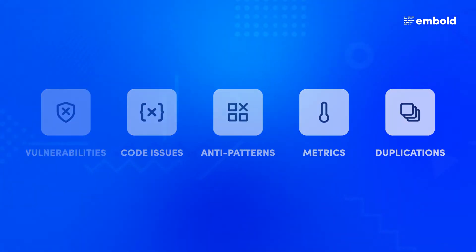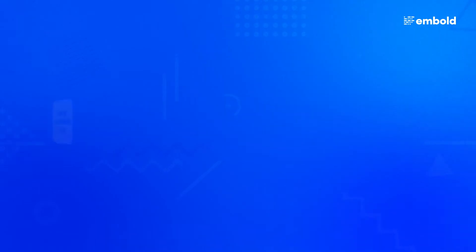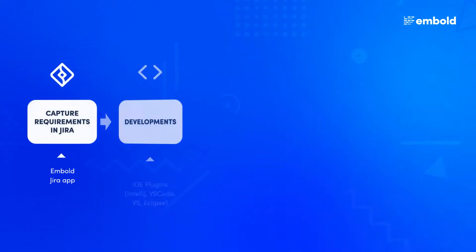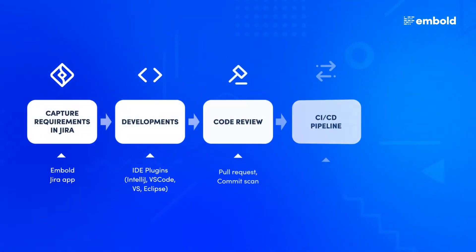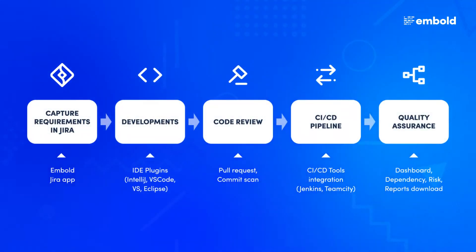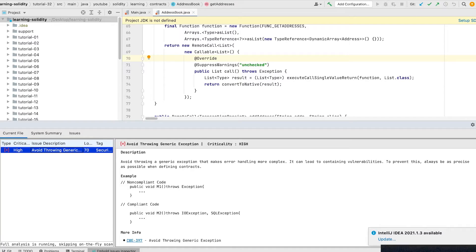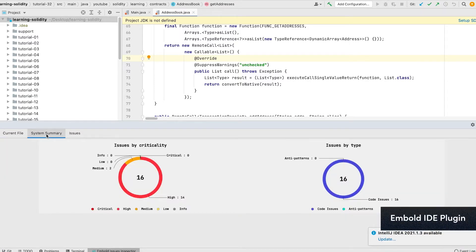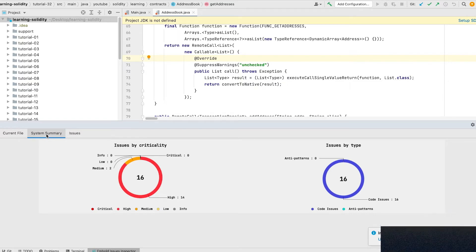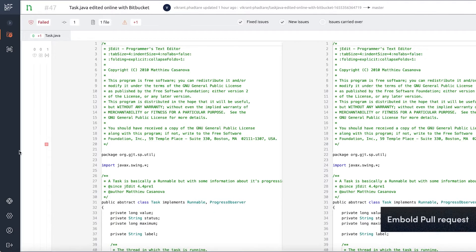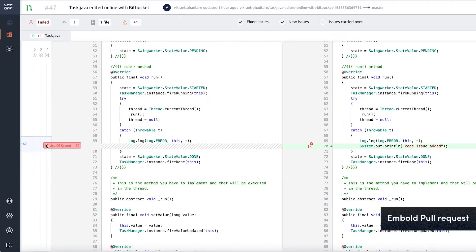The tool can be used throughout the development process. Developers can use Imbold to find out bugs proactively. Imbold IDE plugins are a great way to fix defects as soon as you write the code. Team leads can use Imbold pull requests for code reviews.